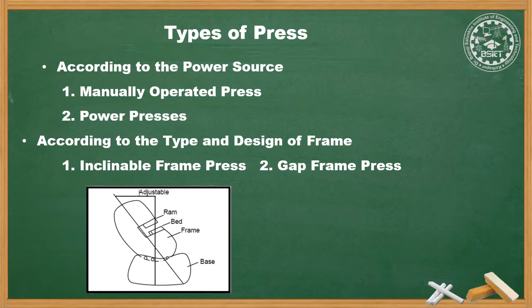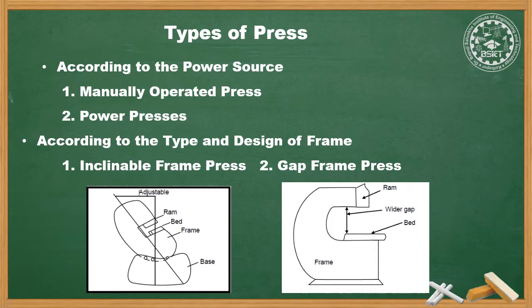The frame of the press can be tilted up to 20 degrees. Due to such arrangement, the strip feeding and die handling is simplified. Next is the gap frame press. In this, the frame is an integral part of the base and cannot be tilted. It is more rigid and stable, hence capable of accommodating large dies.